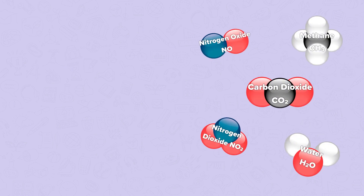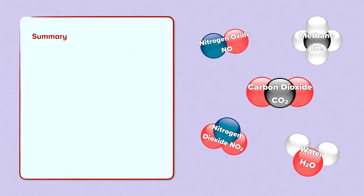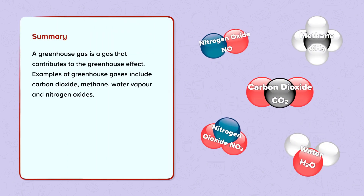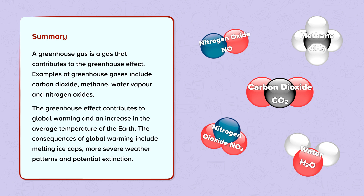To summarise: a greenhouse gas is a gas that contributes to the greenhouse effect. Examples of greenhouse gases include carbon dioxide, methane, water vapour and nitrogen oxides. The greenhouse effect contributes to global warming and an increase in the average temperature of the earth. The consequences of global warming include melting ice caps, more severe weather patterns and potential extinction.